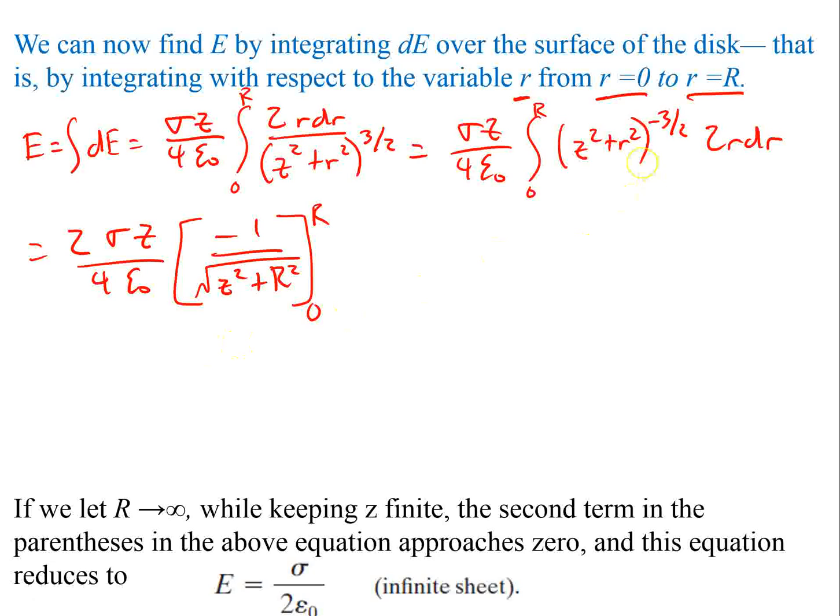So with the integral, the integral of negative 3/2, you're going to add 1 to the exponents. You get negative 1/2, which is why we just have the square root of z squared plus r squared. And then that would all have been divided by a negative 1/2 because that's what the exponent was. So when you divide by negative 1/2, I went ahead and pulled the 2 out over here, and then I put the negative back inside.